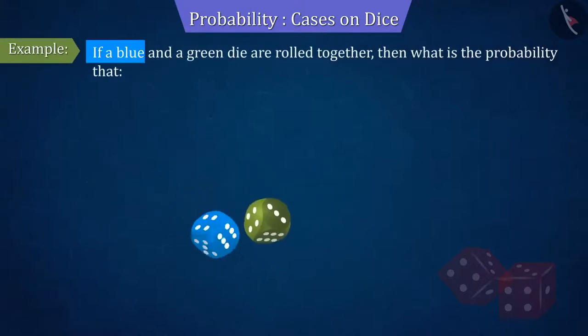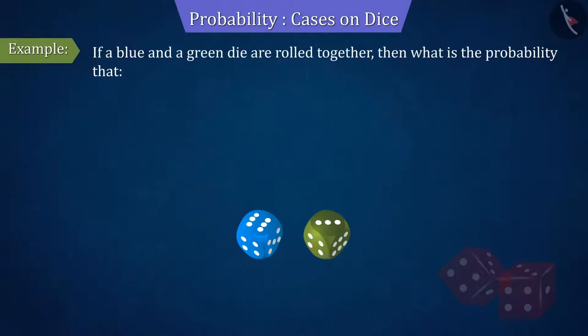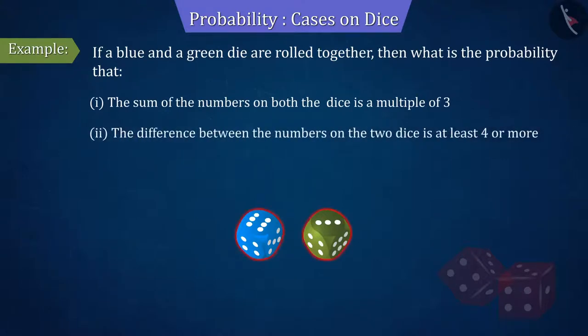If a green and blue die are rolled together, then what is the probability that the sum of the numbers on both the dice is a multiple of 3? And the difference between the numbers on the two dice is at least 4 or more? Let's see.